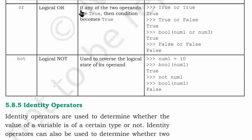Logical OR: If any of the two operands are true, then condition becomes true. True or True is True, True or False is True. Logical NOT: Used to reverse the logical state of its operands.